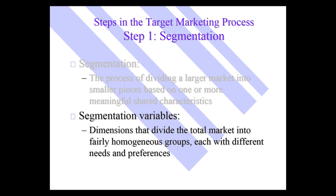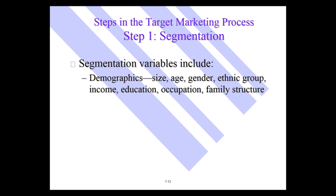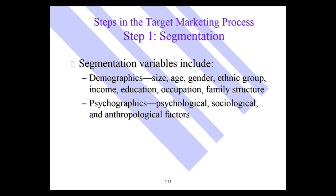Segmentation variables can take a lot of parameters, but the number one variable is demographics: size, age, gender, ethnic group, income, education, occupation, and family structure. Another segmentation variable is psychographic — psychological, sociological, anthropological factors. Another one is behavioral characteristics. So let's go ahead and define markets as we get deeper into market segmentation and target markets.